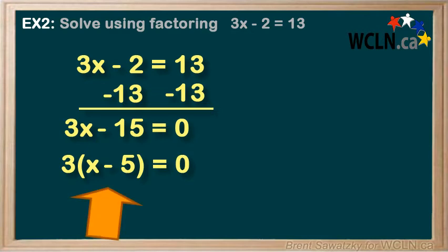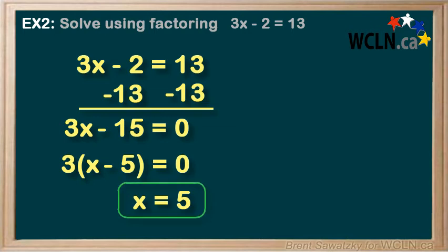The second factor, what could make x minus 5 equal to zero? Well if x was plus 5 then x minus 5 is zero. So there's a solution. x equals plus 5. And so we have only one solution in this case. x equals plus 5.